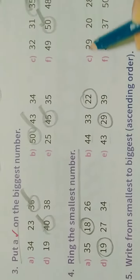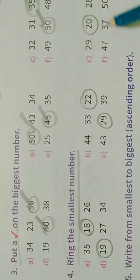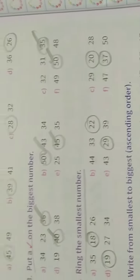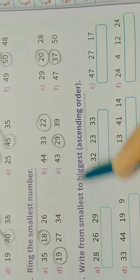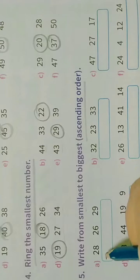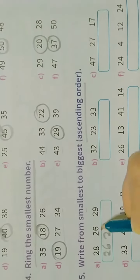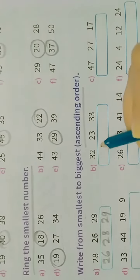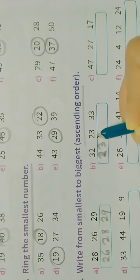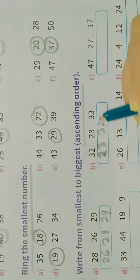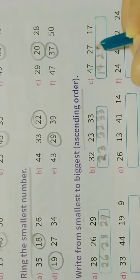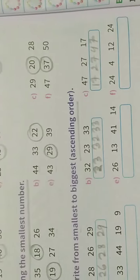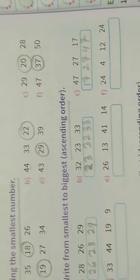Then ascending order, that means smallest to biggest. 26, then 28, then 29. Then again, 23, then 32, 33. 17, 27, 47.